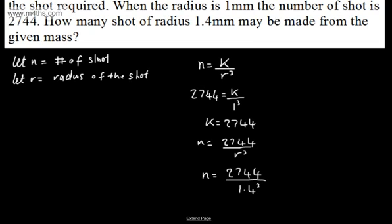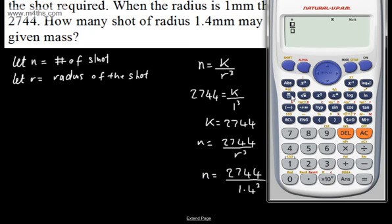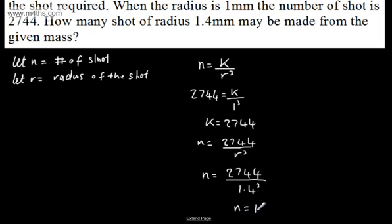So straight for the calculator with this. In the numerator, 2,744. In the denominator, 1.4, and we need to cube this term, and that will give me 1,000. So we can say that n, the number of shot, will be 1,000.